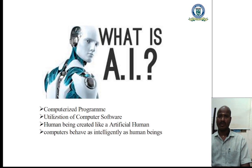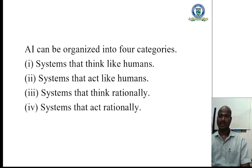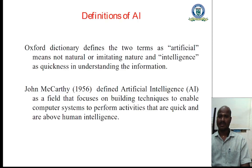Human beings have created a kind of artificial human in artificial intelligence. Computers behave as intelligently as human beings — this is artificial intelligence. Artificial intelligence can be organized into four categories: systems that think like humans, act like humans, think rationally, and act rationally. These are the four categories of artificial intelligence.